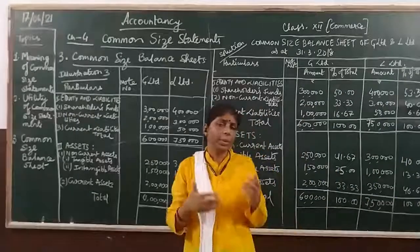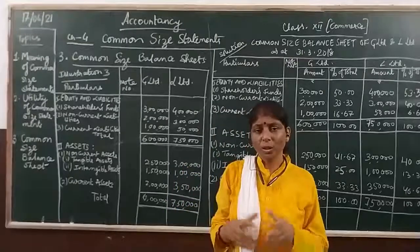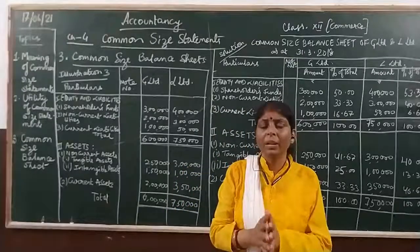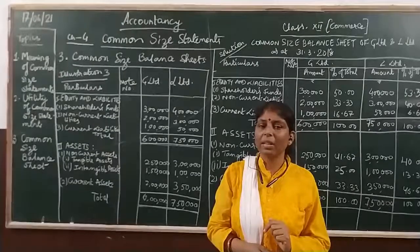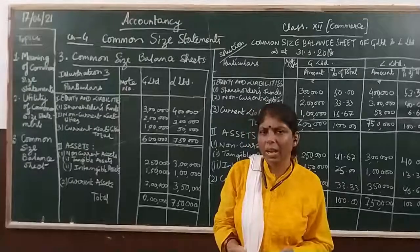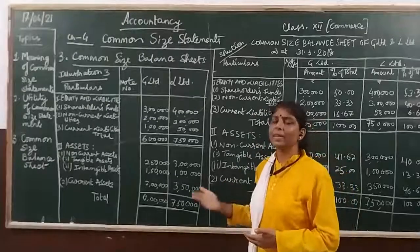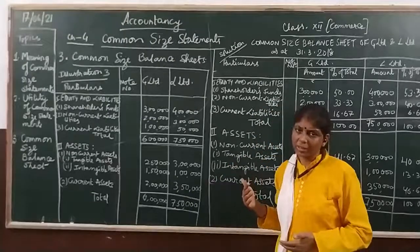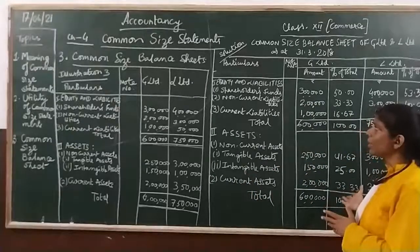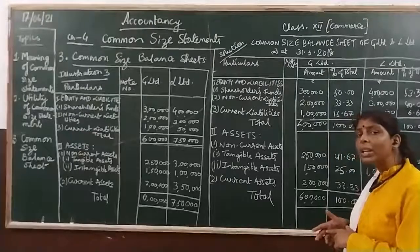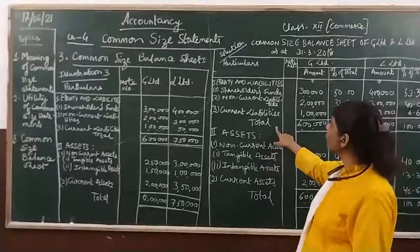When we make common size statements, we consider a basis for common comparison. For the balance sheet, the basis is total assets and total liabilities, which we treat as 100%. In that basis we compare all items. So first let's work through equity and liabilities, starting with shareholders' funds.